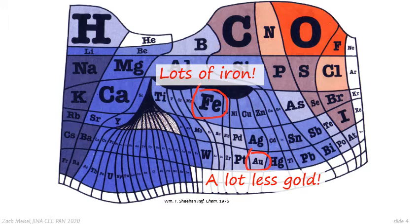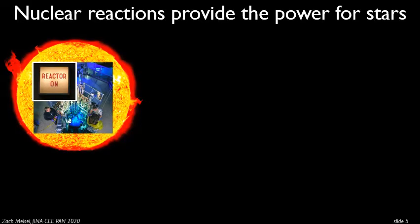We can answer why the barn is red: it's because a lot of iron was made in the universe. So how is the iron made? Iron, as all the elements, is made in stars and stellar explosions, and quite a bit of iron is made during stellar fusion. Stars themselves are basically giant nuclear reactors — nuclear reactions provide the power for stars. It's a fusion reactor and not a fission reactor, but a reactor nonetheless.